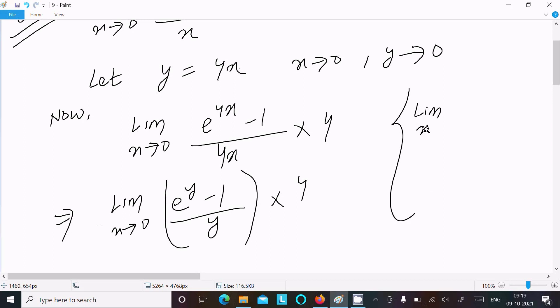Limit x tends to 0, e power x minus 1 divided by x, that is equal to 1. You should remember this formula.